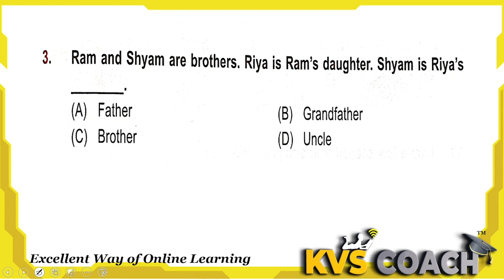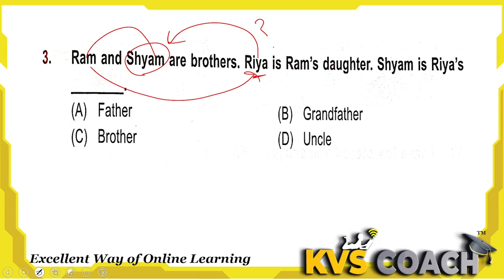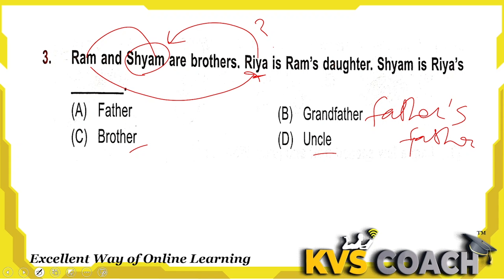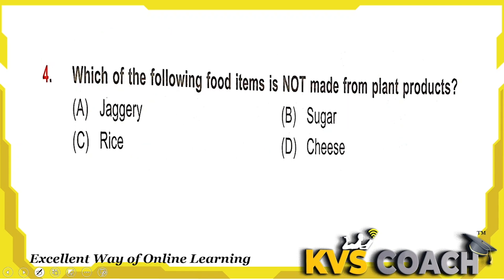Next question: Ram and Sham are brothers. Ria is Ram's daughter. So what is Sham's relation to Ria? Ram is Ria's father. Father's father is grandfather. A male sibling is a brother, a female sibling is a sister. My father's brother is my uncle — so Sham is Ria's uncle. Option D is the right answer.